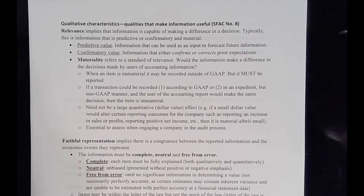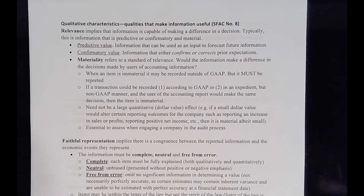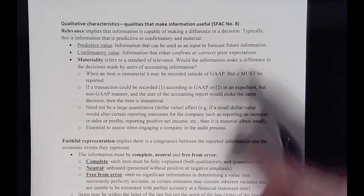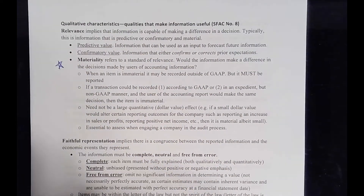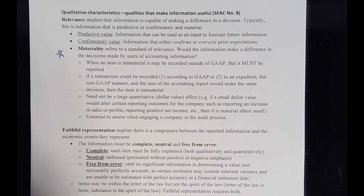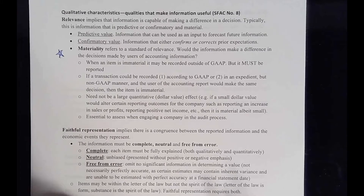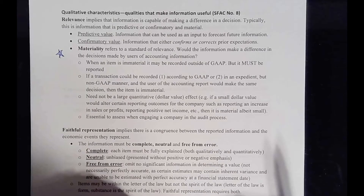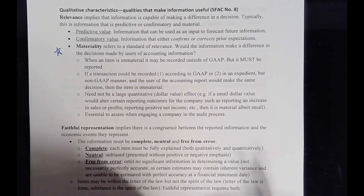Relevant information also has confirmatory value — information should either confirm or correct prior expectations. Materiality is a big one that you really need to focus on because it's going to come up again and again, not just in this course but in other accounting courses. Materiality refers to whether there is a certain threshold of relevance: would the information make a difference in the decisions made by users of accounting information? If an item is material, it will make a difference. If an item is immaterial, it may not make a difference in how someone decides to invest their money.